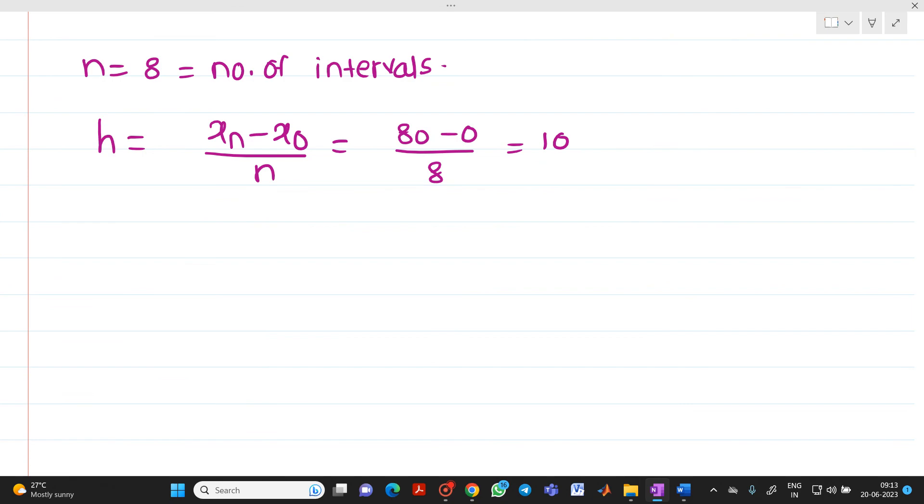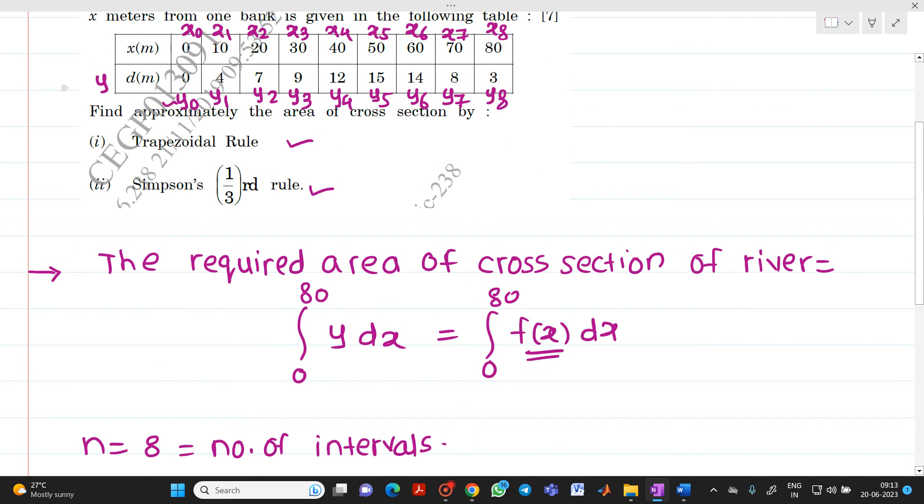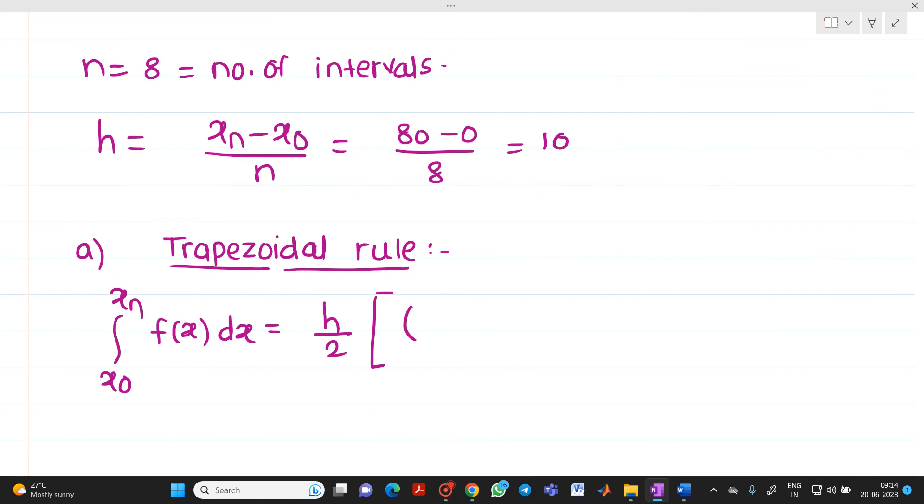First, we will solve it with the help of trapezoidal rule. What is the equation? The area of cross section, integration x0 to xn of f(x) dx, equals h by 2 into bracket: sum of first and last ordinates y0 plus y8, plus 2 into sum of remaining ordinates y1 plus y2 plus y3 plus y4 plus y5 plus y6 plus y7.